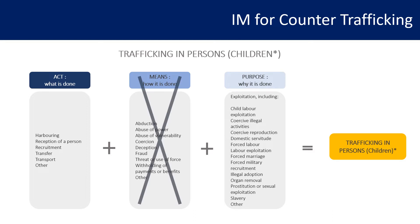When the definition of trafficking in persons is applied to children, from a legal perspective, means do not need to be proved. However, from an information management perspective, the situation is slightly different: while legally means do not need to be proved, from a research perspective we are still interested in learning about means, because the information management activities we conduct inform program implementation such as prevention, assistance, and advocacy.